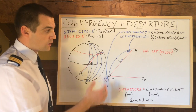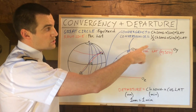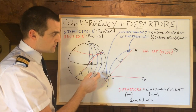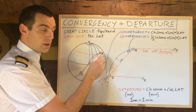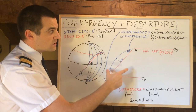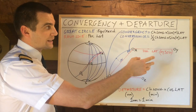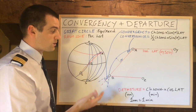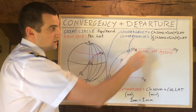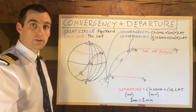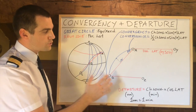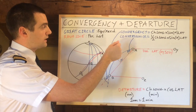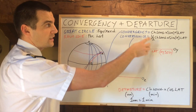Now the formulas. Convergency equals the change in longitude multiplied by the sine of the mean latitude. The change in longitude is simply the difference between the longitudes of point A and point B — for example, if A is at 30° East and B is at the Greenwich meridian (0°), the change in longitude is 30 degrees. The mean latitude is just both latitudes added together and divided by 2 — an average. So if point B is at the equator (0°) and point A is at 50° North, the mean latitude is 25°, giving you 30 × sin(25°). The conversion angle, which is the difference between the initial great circle heading and the rhumb line, is simply half of the convergency.